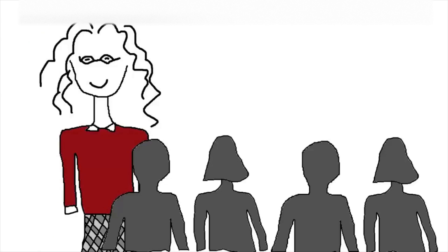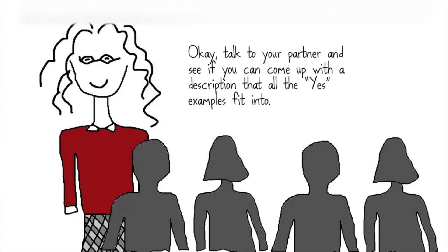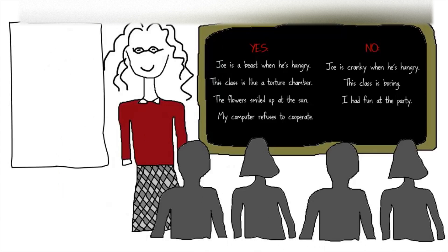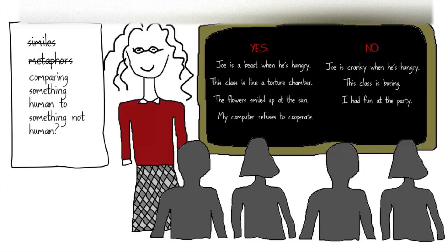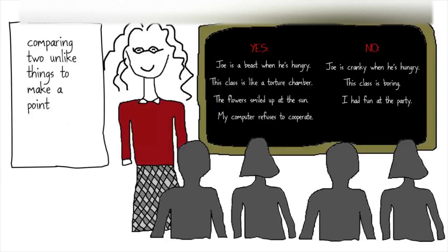Now ask students to come up with a list of attributes that describe this concept: 'Talk to your partner and see if you can come up with a description that all the yes examples fit into.' Some students initially thought that my examples were all similes and metaphors. They suggested these, so I put them down as we were brainstorming. Then they looked more carefully at the last two yes examples and realized a more broad description was needed. So we changed the definition to 'comparing something human to something not human,' but then changed it again to 'comparing two unlike things to make a point,' as students started to grasp that figurative language uses some device to make a point instead of just saying it plainly.